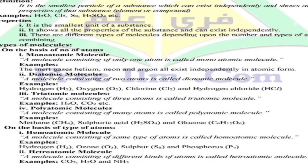A molecule consisting of different kinds of atoms is called heteroatomic molecule. Examples: CO2, H2O, and NH3. Hetero means different. The molecule containing different atoms, for example carbon dioxide, in which carbon is different from oxygen. Similarly, in water molecule hydrogen is different from oxygen, and in ammonia nitrogen is different from hydrogen.